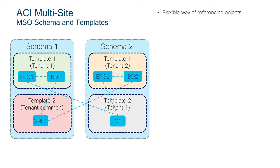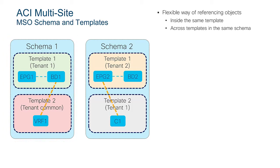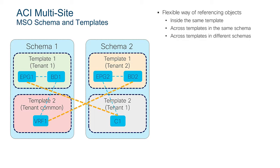You can organize things in quite a flexible way. You can reference objects inside the same template — for example, schema one has a template one where EPG1 is associated to BD1. You can also reference objects across templates in the same schema — BD1 is associated to VRF1, and VRF1 is defined in a separate template associated to a different tenant like tenant common. It is quite common to define the networking constructs in the common tenant and have specific tenant policies referencing those common networking objects. You can also reference objects across templates in different schemas.